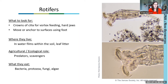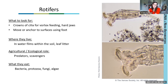Rotifers feed on bacteria and protozoa — anything smaller than they are. Because they exist in this water film, they're very sensitive to moisture levels. To survive when water dries up in the soil, they form cysts — a resting animation stage — and can survive that way for long periods. The longest previously known stasis period was 10 years, but scientists recently revitalized rotifers from permafrost that was 24,000 years old, and those rotifers went on to reproduce.